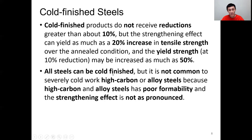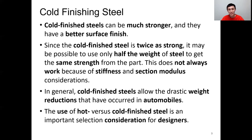All steels can be cold finished, but it is not common to severely cold work high carbon or alloy steels because the strengthening effect is usually not significant for those materials. Cold finished steels can be much stronger, and they also usually have a better surface finish. Since the strength of cold finished material is typically twice that of hot worked material, the width of the material can be reduced by half while maintaining the same strength — though this does not always hold due to stiffness and section modulus considerations. Because of this weight reduction, many automobiles use cold finished material.